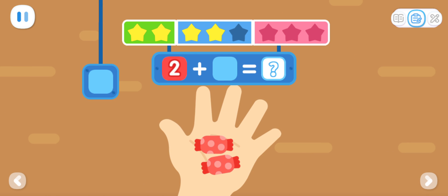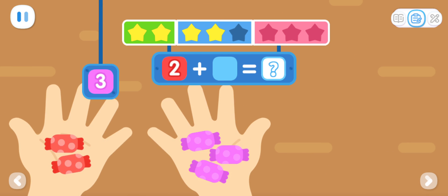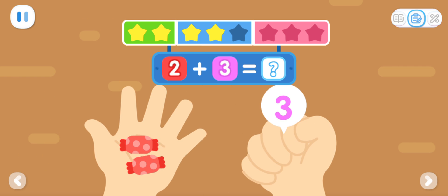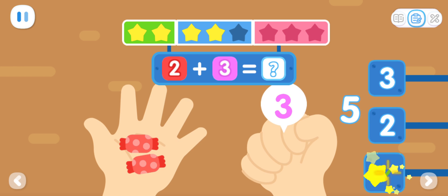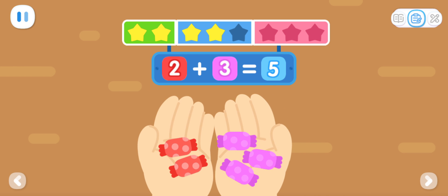There are two candies in the left hand. There are three candies in the right hand. How many candies are there in total? You've got it! Two plus three equals five.